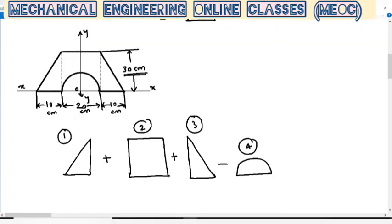Let us first find the moment of inertia of the composite figure about the X axis. The X axis here is along the base of the composite figure. If we carefully check, the X axis of the composite figure coincides with the base of every individual figure as well — entities 1, 2, 3, and 4 all have their bases coinciding with the X axis.